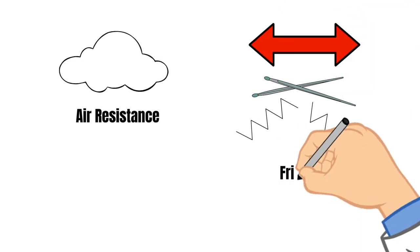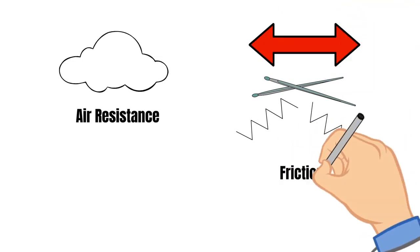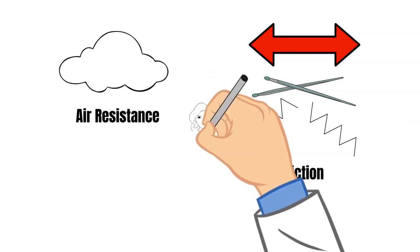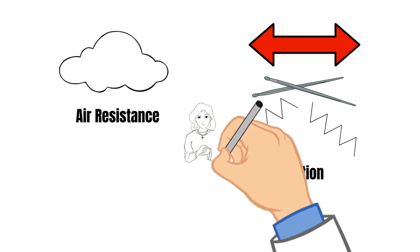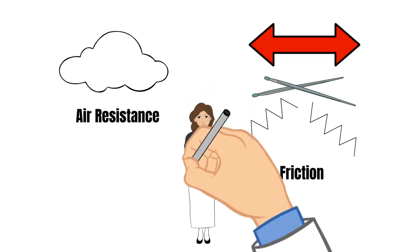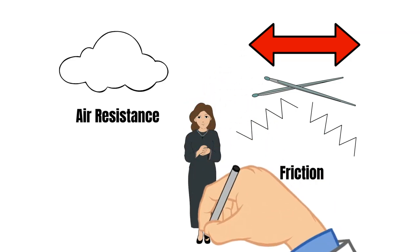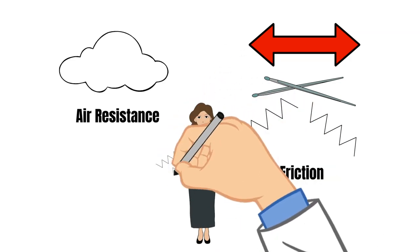So when you rub your hands together when they're cold this is friction working to heat up your hands for you. It is resistance between your two hands.